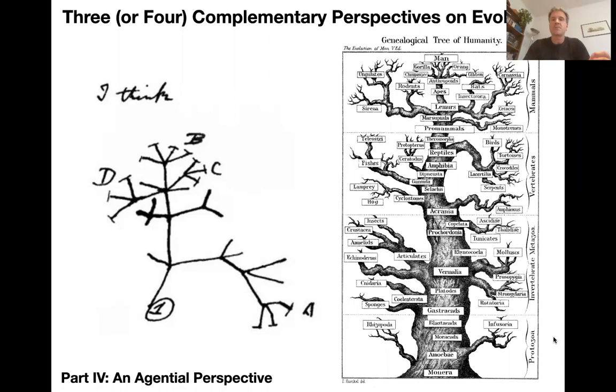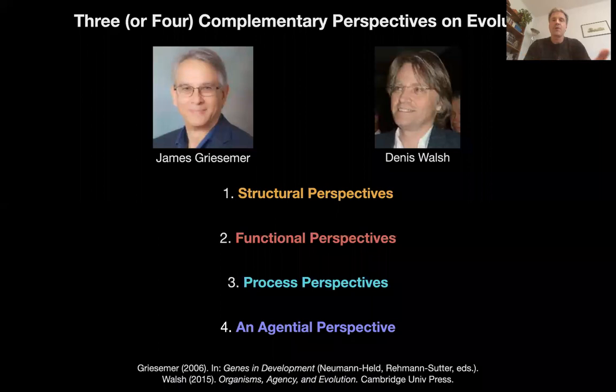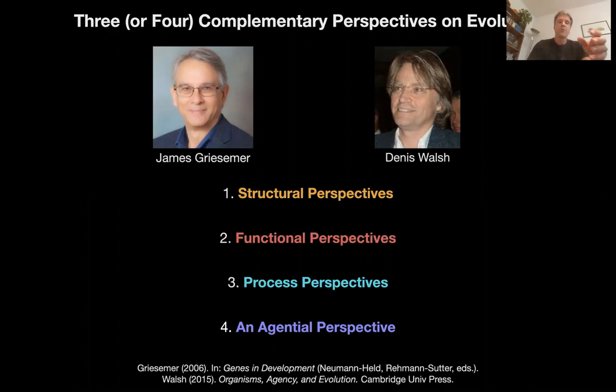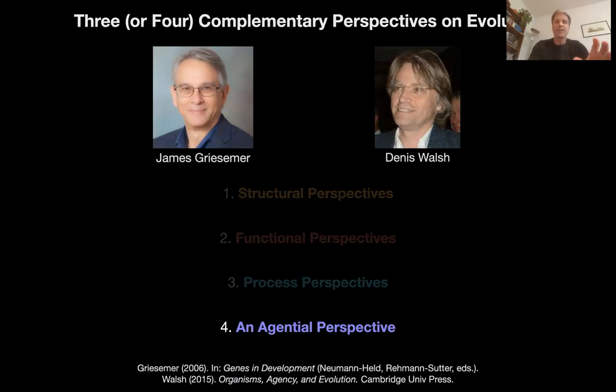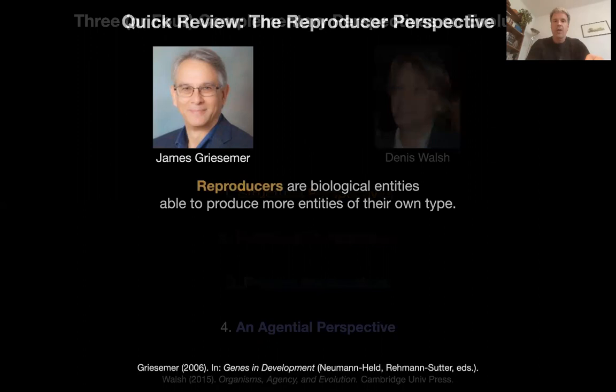Hello and welcome back to Beyond Networks, the evolution of living systems. We've covered a bunch of different perspectives on evolutionary theory — structural perspectives, units of selection, functional perspectives, replicators and interactors, process perspectives from structural process structuralism to developmental systems theory to James Chrismar's reproducer. We're going to move on and see how this reproducer perspective fits into a perspective on evolution that takes the organism as an agent, an autonomous agent, really seriously.